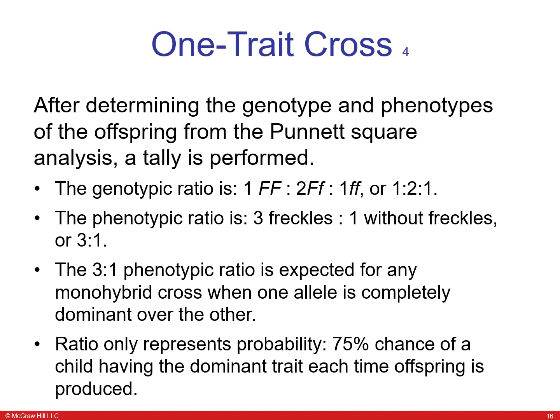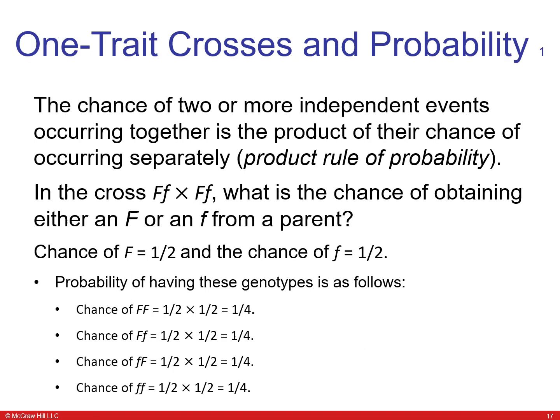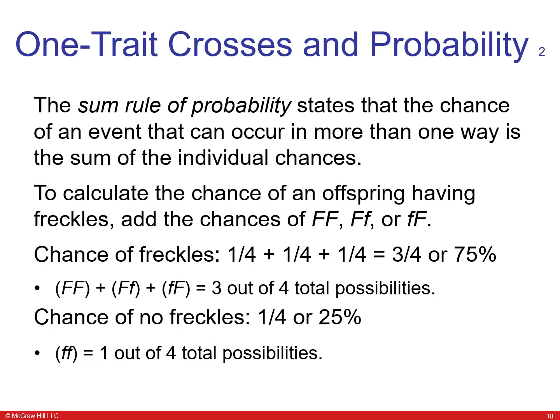The ratio only represents probability — a 75% chance of a child having a dominant trait each time offspring is produced. The product rule states that the chance of two or more independent events occurring together is the product of their individual chances. If the cross is Ff × Ff, the chance of obtaining an F or f from a parent is one-half. There is a one-in-four chance of homozygous dominant, one-in-four heterozygous, and one-in-four homozygous recessive. The sum rule states that the chance of an event occurring in more than one way is the sum of individual chances — so the chance of having freckles is 75% and no freckles is 25%.